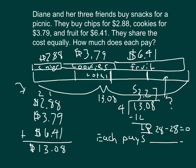And be careful, that's dollars and cents, that's why we're dividing by 4. So each of them pays $3.27.